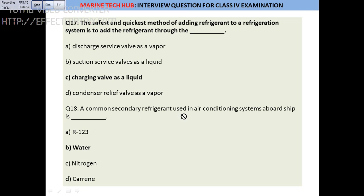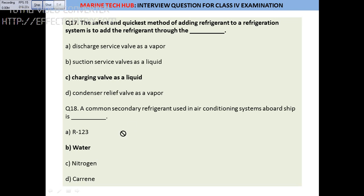Question 18: The secondary refrigerant used in the air conditioning system on a ship — the answer is water. The primary refrigerant is freon. The secondary refrigerant is water, or it can be air, but since air is not listed as an option here, the answer is water.